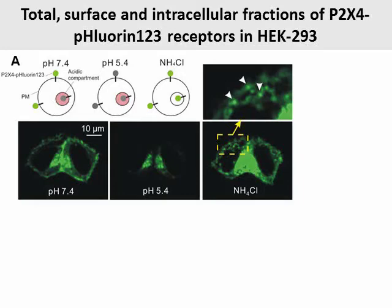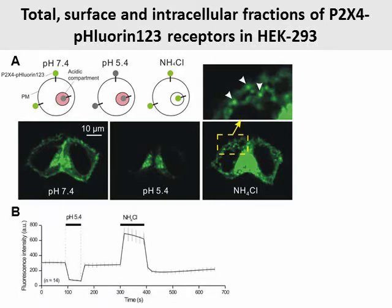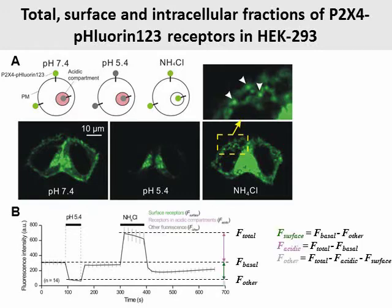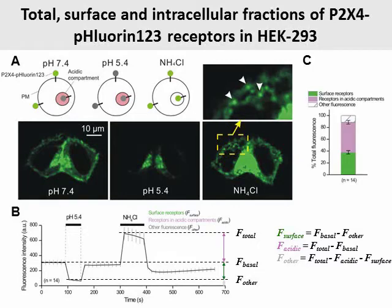Since protons do not cross the plasma membrane, we could use pH 5.4 solution to measure the surface fraction. Ammonia is membrane permeable and will cross the membrane and iconize the acidic vesicles. Thus, applications of ammonium chloride were used to reveal the total receptor fraction. After completing the experiments and quantifying the fluorescence intensity in different solutions, the fractions could be calculated by the equations shown in panel B. From these measurements, we found that there were 40% receptors on the membrane, 50% in acidic compartments, and a further 10% residing in other compartments.